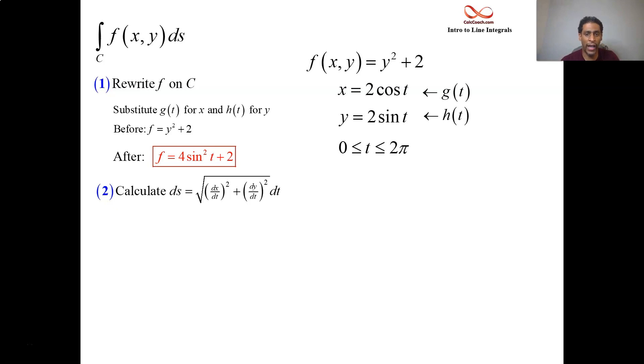So we have negative 2 sine t for the g prime or x prime and we have 2 cosine t for the y prime or h prime. These guys get squared and they get added and then you take a square root.